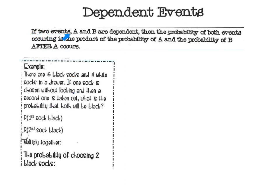At the top it says: if two events are dependent, then the probability of both events occurring is the product of the first probability and the second probability. When something is dependent, you are going to have to find the product of both events. I'm going to write one fraction, then the second fraction, and then multiply them — product means multiply. First I'll make my two fractions, then multiply them together.